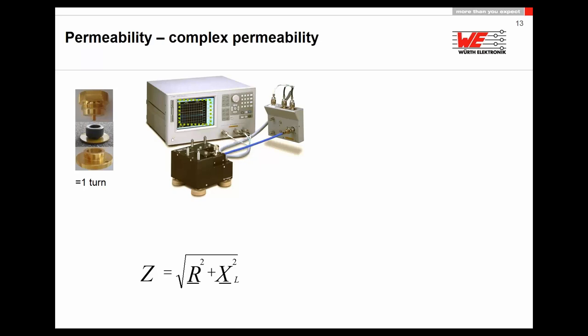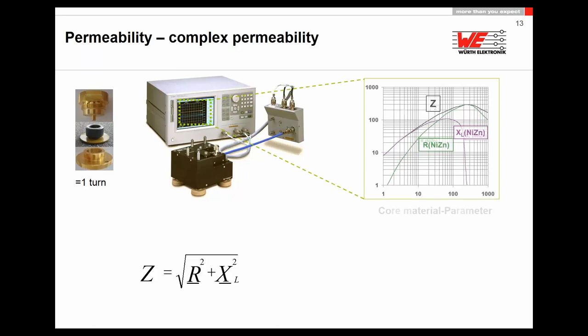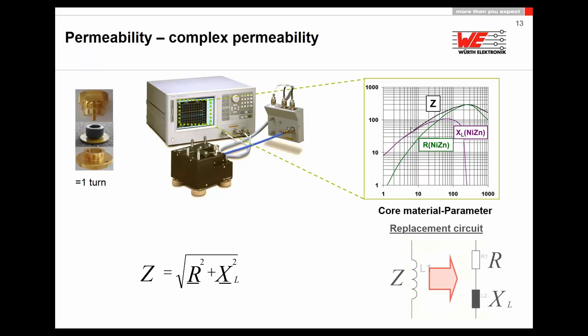Measuring permeability is not trivial — you need an impedance analyzer with special fixtures and jigs, an investment of around €80,000. And even if the impedance analyzer tells you the impedance is 100 Ω, that alone isn't enough information. Impedance Z is the root mean square of R² + XL² — you need to know the inductive reactance XL (energy storage ability) and the resistive losses R separately. These are the two areas you must understand.